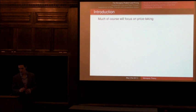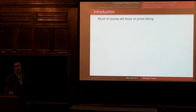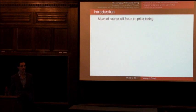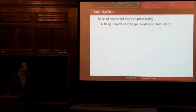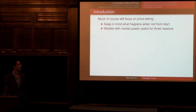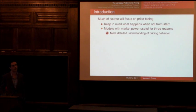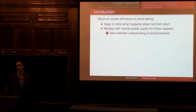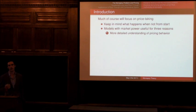Today, I'm going to be talking about the basics of monopoly theory. Much, if not most, of this course is going to focus on the behavior of consumers and firms when they take prices as given. But I think it's useful to start the course with a consideration of what happens when these assumptions are violated — and this is exactly what models of market power incorporate. These can be useful for three main reasons. First, they give us a more detailed and rich understanding of pricing behavior, taking into account that firms choose their prices and their production.